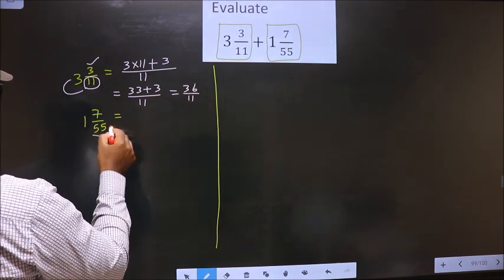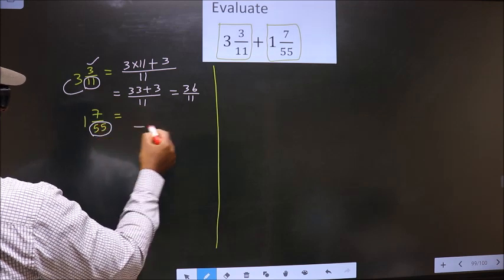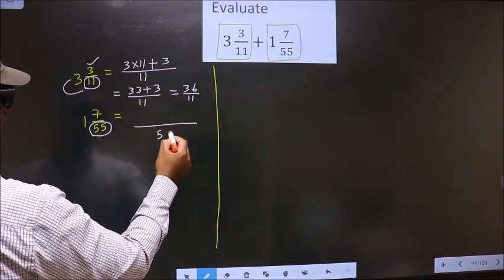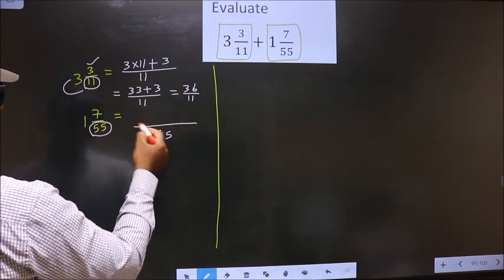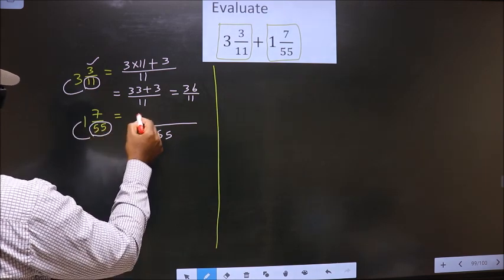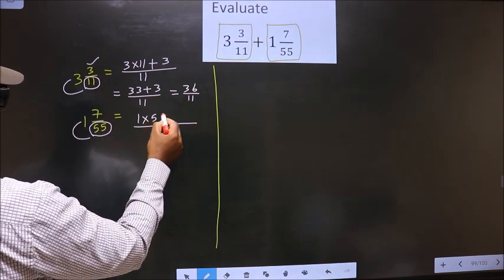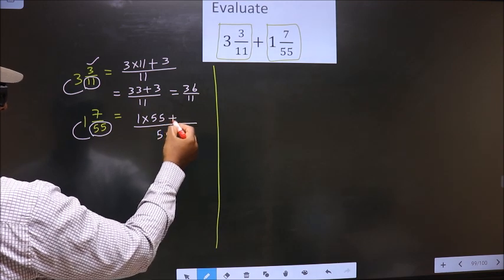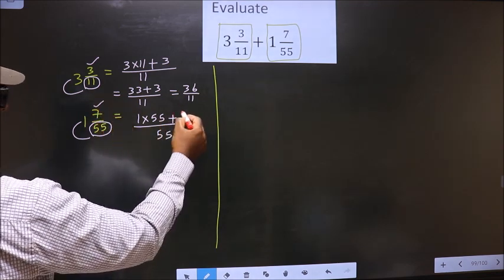Now, here the denominator is 55, so here also you write 55. In the numerator, we should multiply these two numbers, that is 1 into 55, and also add this number, that is 7.